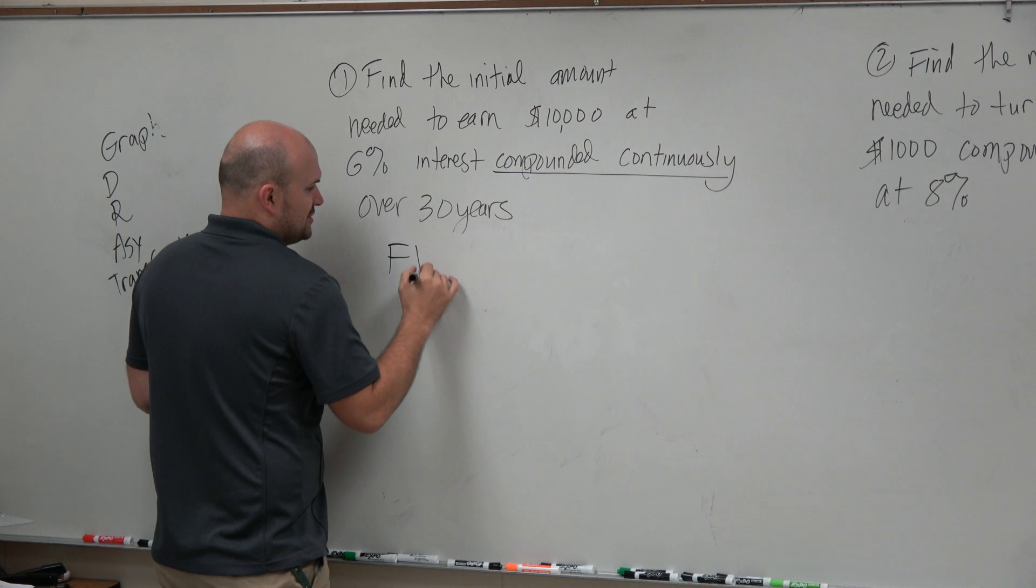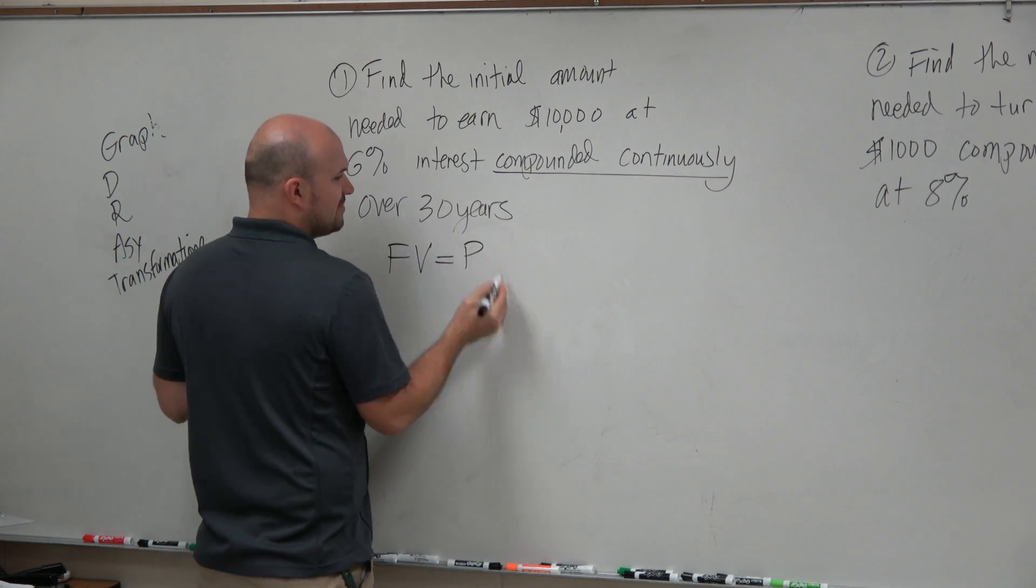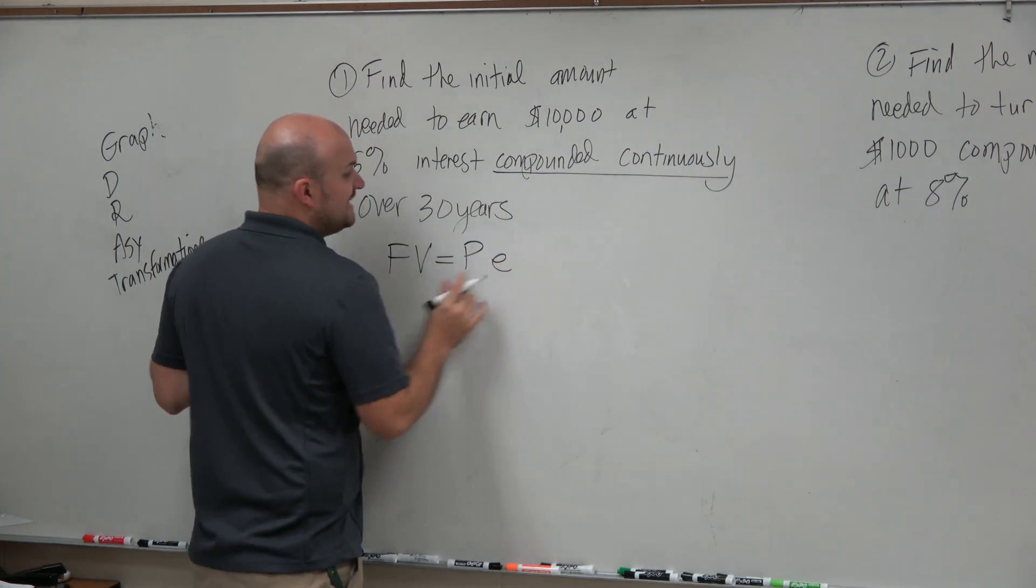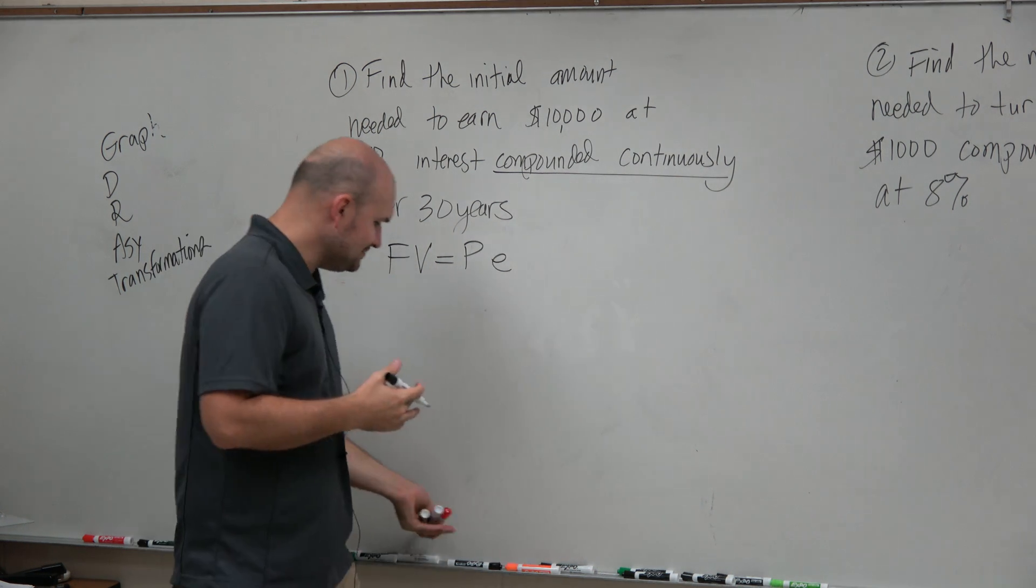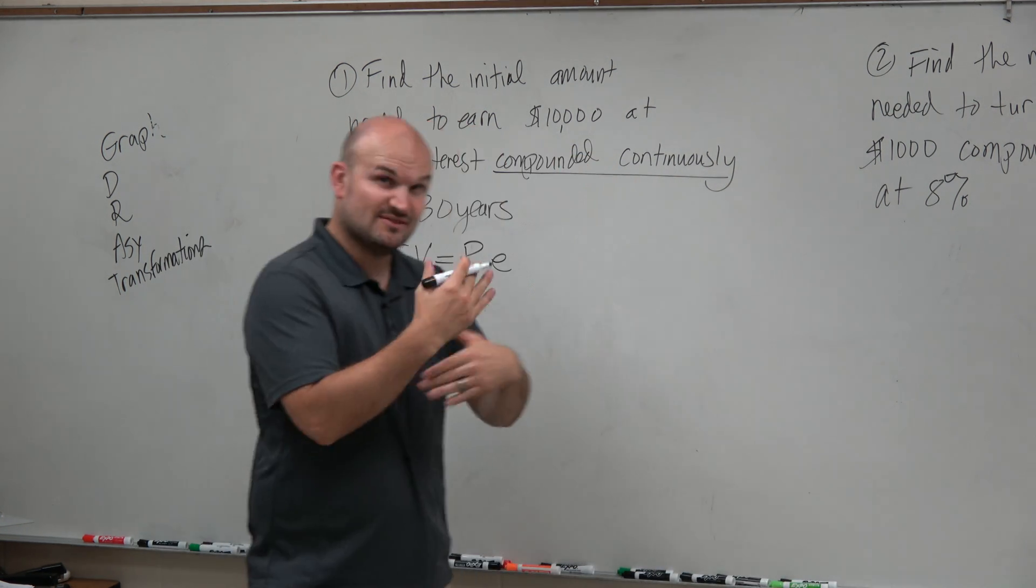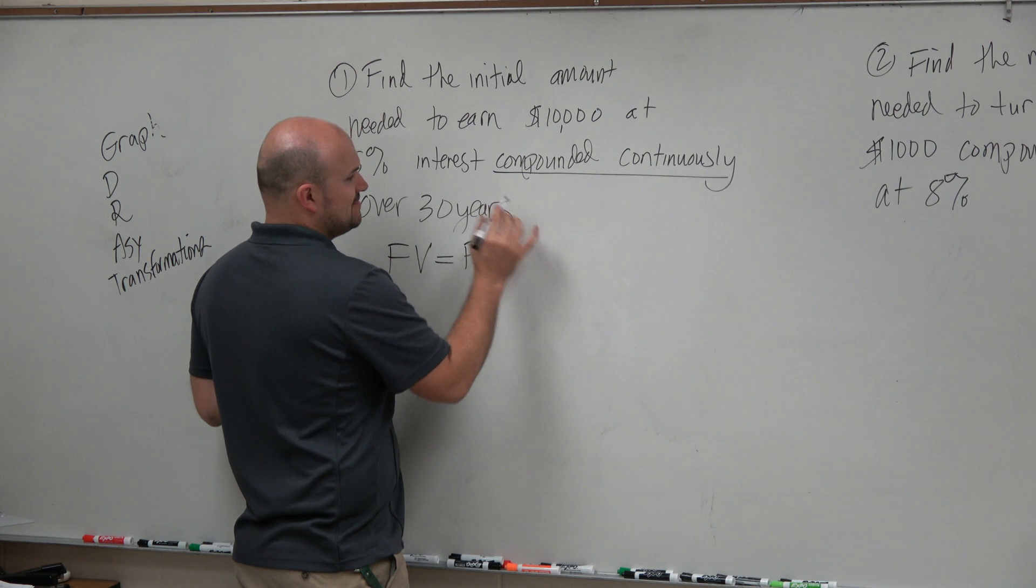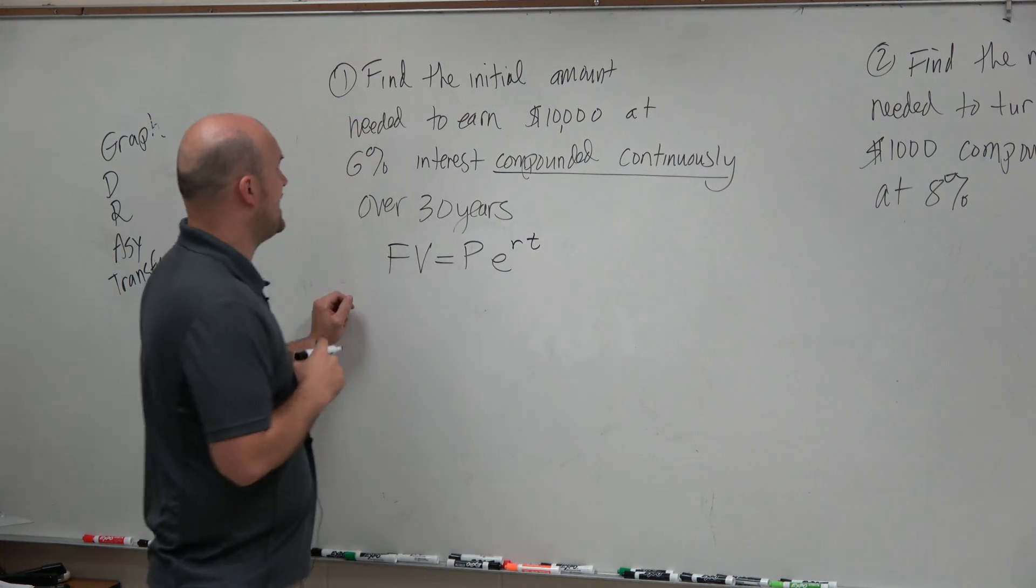The formula for compound interest is future value equals the present value times E, which is going to basically be our rate of compounding, times R, which is your interest rate, times T, which is your time.